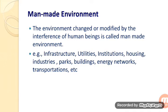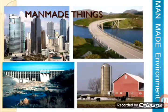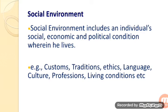The second type is man-made environment. The environment changed or modified by the interference of human beings is called man-made environment. Examples are infrastructure, utilities, institutions, housing, industries, parks, buildings, energy networks, and transportation. The third type is social environment, which includes an individual's social, economic and political condition. Examples include customs, traditions, ethics, language, culture, professions, and living conditions.